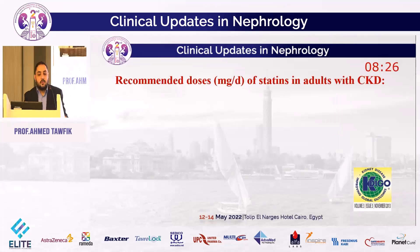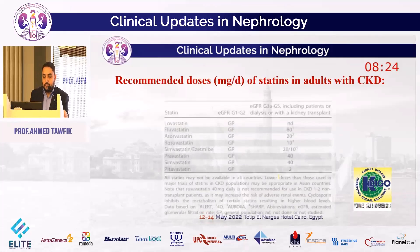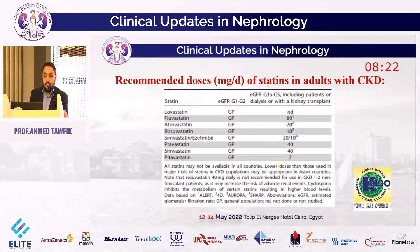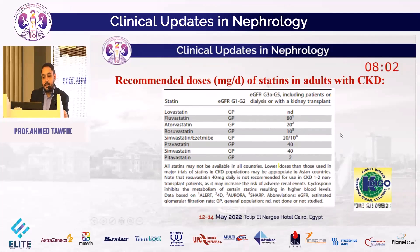Regarding recommended doses of statins in adults with CKD: in CKD stages 1 and 2, dosing is as in the general population. In CKD stages 3A to 5, lovastatin is not studied; fluvastatin 80 mg/day; atorvastatin 20 mg; rosuvastatin 10 mg; simvastatin-ezetimibe 20/10 mg; simvastatin 20 to 40 mg; and pitavastatin 2 mg per day.